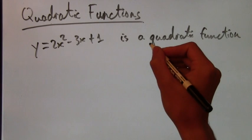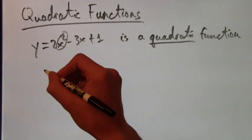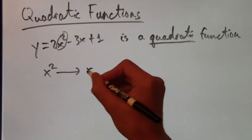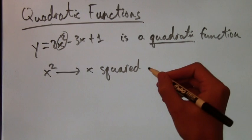A good way to remember that a quadratic function has a square in it is the following. If we have x squared, imagine a square, which is a quadrilateral. It's something that has four sides.